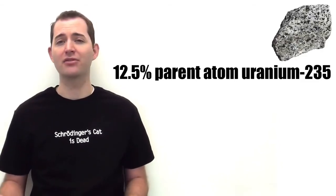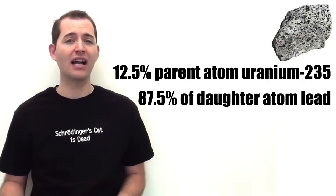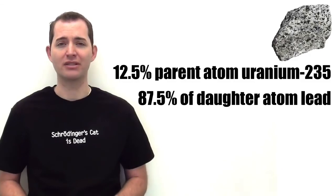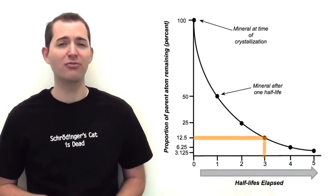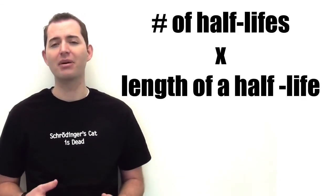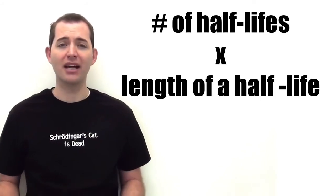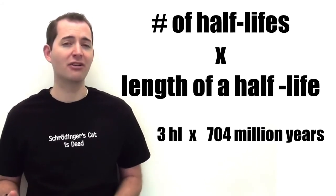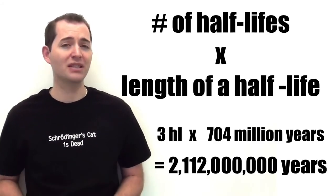For example, if we have a rock sample that contains a ratio of 12.5% of the parent atom uranium-235 and 87.5% of the daughter atom, which is lead, we can determine how many half-lives have elapsed since this rock was first formed. Looking back at our graph, a sample that contains 12.5% of the parent atom has undergone three half-lives. Our next step is to multiply the number of half-lives, which is three, by the length of a half-life for uranium-235, which is 704 million years. This tells us that this rock is over 2 billion years old. This is a simple example of how absolute or radiometric rock dating is used to determine the age of rocks, fossils, and other items.